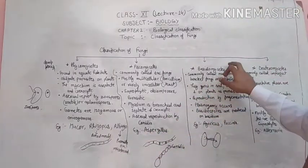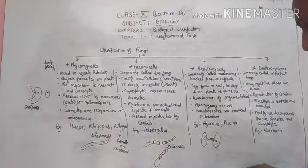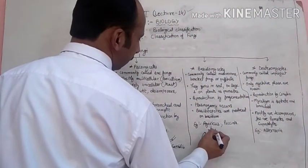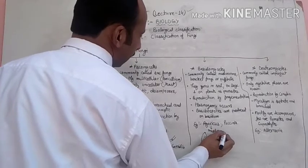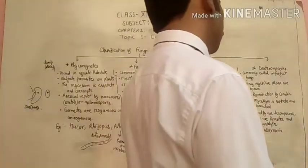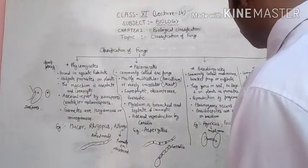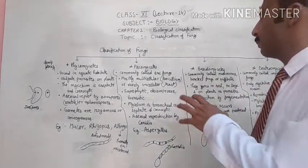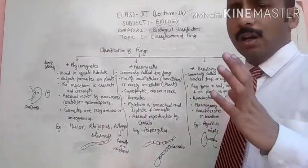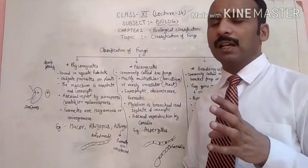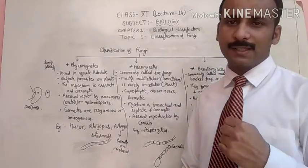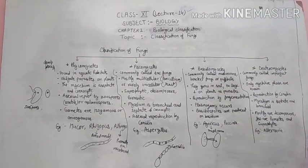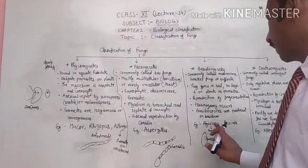An example of Basidiomycetes is Agaricus, commonly known as mushroom, which you commonly eat in your daily diet. Not all mushrooms are edible — some are very poisonous — but Agaricus is one of the edible ones.